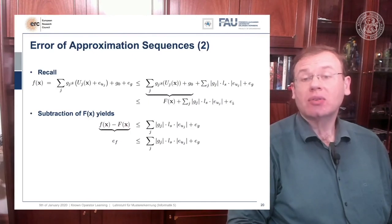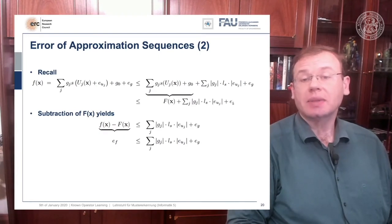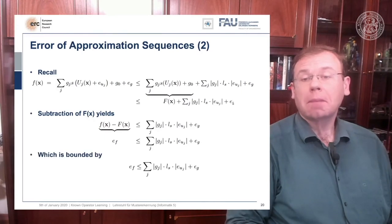So we have an upper bound for the error in ef that is composed as the sum on the right hand side. And we can still replace the eg by epsilon g, which is the upper bound to eg, and it's still an upper bound to ef.